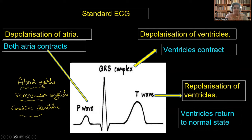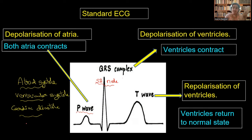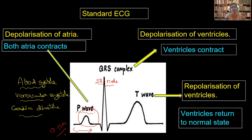So now what is this P wave? It represents atrial systole. Whenever the SA node — the pacemaker of the heart — initiates the contraction, the atria start to contract. This is called atrial systole, and whenever the atria contract, we also call it depolarization of atrial systole. This atrial systole is represented by what is called the P wave. It lasts for about 0.1 seconds.